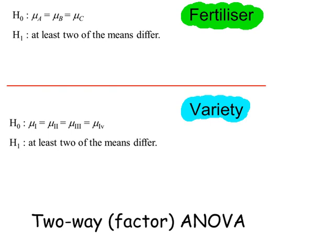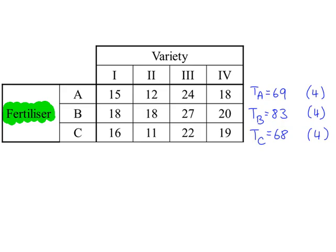The hypotheses for the type of fertiliser and the hypotheses for the variety of strawberry. Starting with the fertiliser, working out the total for each row. So the total for A, and there are four values in sample A, and similarly for B and C.